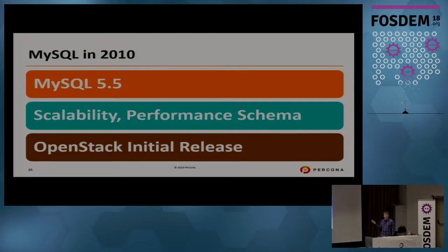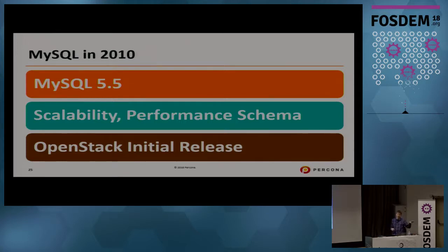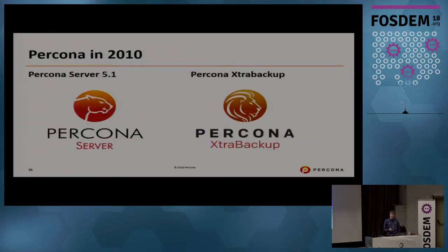Looking at the ecosystem highlights of that time — we got the initial OpenStack release, supporting the private cloud phenomenon. People were now able not only to use solutions like Amazon using their infrastructure, but also had a completely open source way to run cloud in their own data centers.